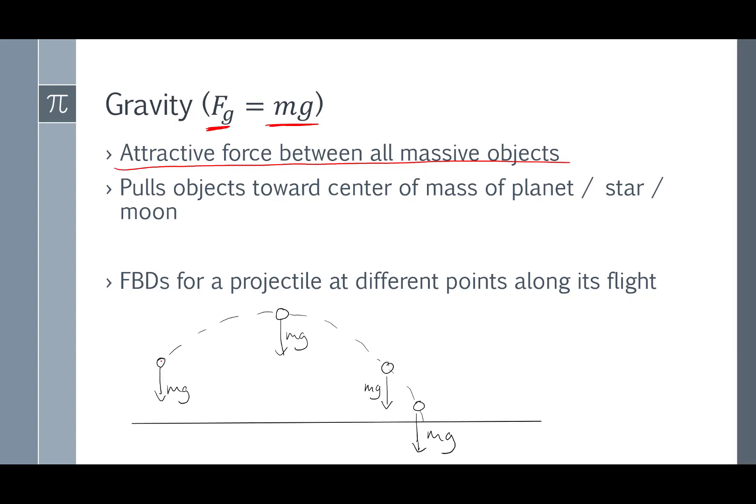So here is a projectile going through the air, and these are snapshots of the projectile at different times in its flight. And I've also drawn free body diagrams for the projectile. There's only one force acting, it's gravity, and it pulls straight down. So I've drawn my downward arrow and I've labeled it mg. And it's the same everywhere because the force of gravity stays the same everywhere. The force of gravity is also called the weight of an object.